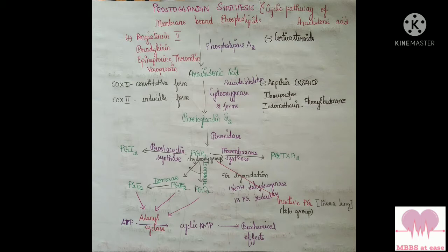Arachidonic acid is also inhibited by cortisol. Arachidonic acid on the action of cyclooxygenase enzyme gives PGG2 — prostaglandin G2. The cyclooxygenase is a suicide enzyme. It has two forms: the constitutive form and the inducible form.